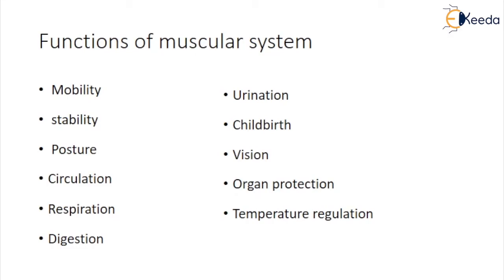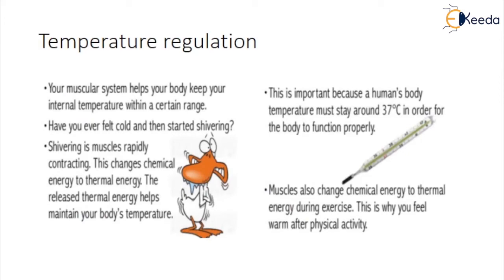Temperature regulation: maintaining normal body temperature is an important function of the muscular system. Almost 85% of the heat a person generates in their body comes from contracting muscles. When body heat falls below optimal levels, skeletal muscles increase their activity to make heat — shivering is one example of this mechanism. Muscles in blood vessels also contract to maintain body heat. Body temperature can be brought back within normal range through the relaxation of smooth muscle in blood vessels, which increases blood flow and releases excess heat through the skin. The human body temperature must stay around 37 degrees Celsius for the body to function properly. Muscles also convert chemical energy to thermal energy during exercise, which is why we feel warm after physical activity.